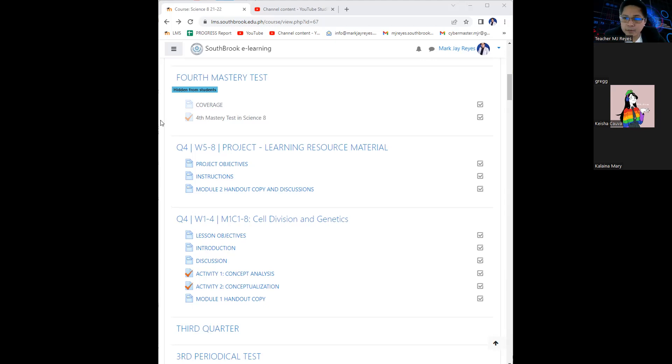For today, as what I had promised, I'll be giving you examples for your learning resource material. Let me reiterate what we had agreed upon with your project. You need to make a learning resource material out of the topic in the fourth quarter, weeks one to four, entitled heredity and genetics.